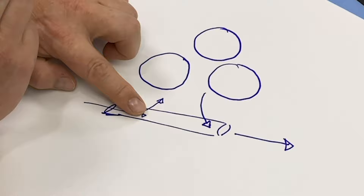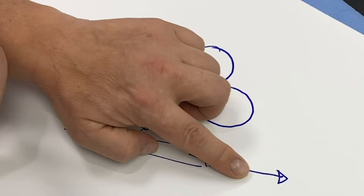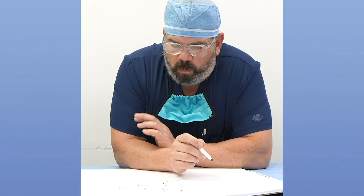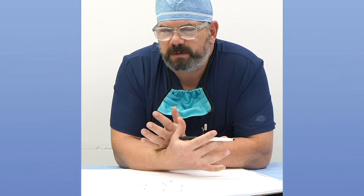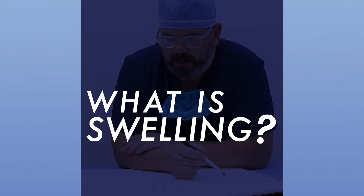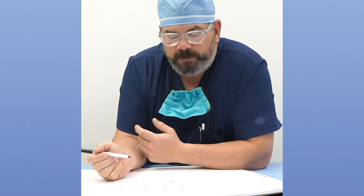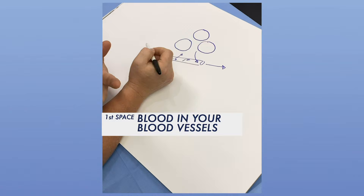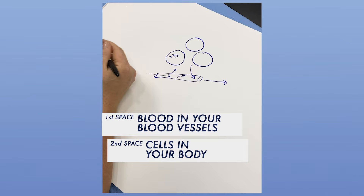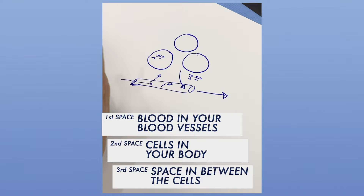There's a communication here of fluid delivering nutrients and fluid coming out of cells going back to your heart. So when you swell, where does the fluid really go? The fluid goes to what we call the third space. The blood in your blood vessels is the first space, the cells in your body are the second space, and the third space is the space in between the cells — that's the part that really swells.